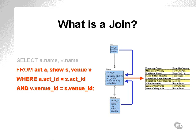In other words, many acts within venues. The join is actually executed by the WHERE clause — joins between the ACT and SHOW tables on the act ID, and the VENUE and SHOW tables on the venue ID.